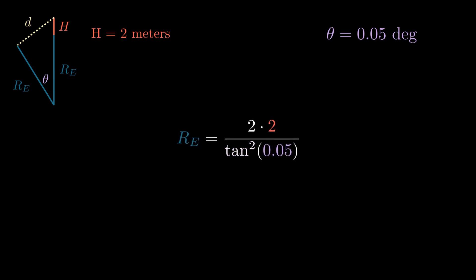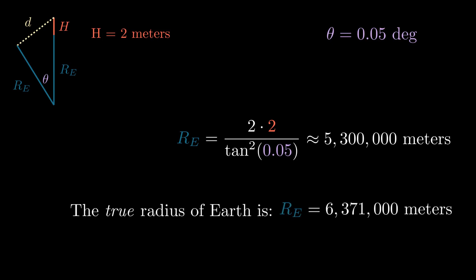Using these values, we find the Earth's radius to be 5.3 million meters. The true value for Earth's radius is closer to 6.4 million meters, but this is really close for such a crude experiment.